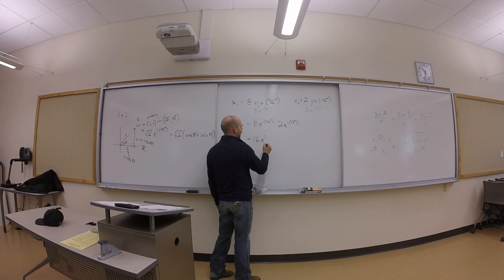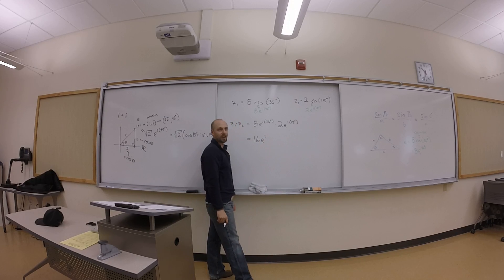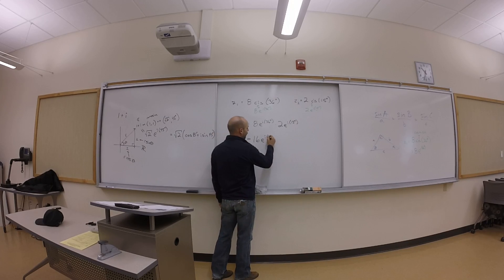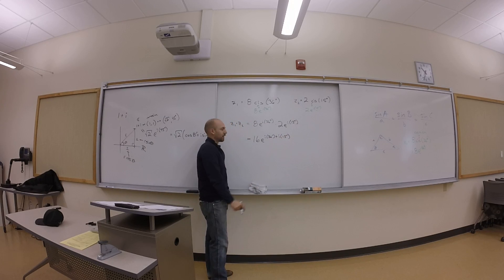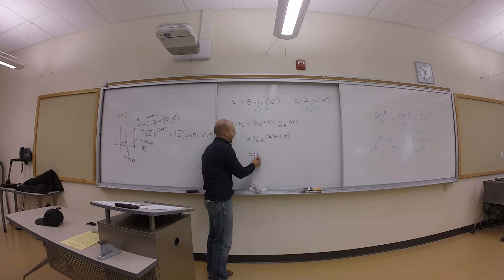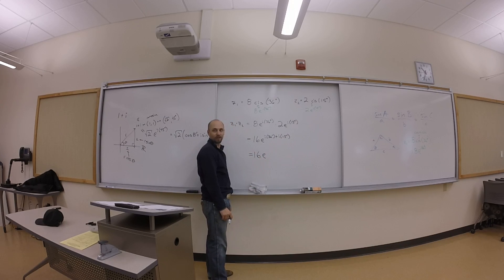Sixteen. And this is ei, and now what do you do with the exponents there? Add them. Add them, right? So you've got ei 36 degrees plus i 15 degrees. See that? And then you can factor out or just add. What do you get?